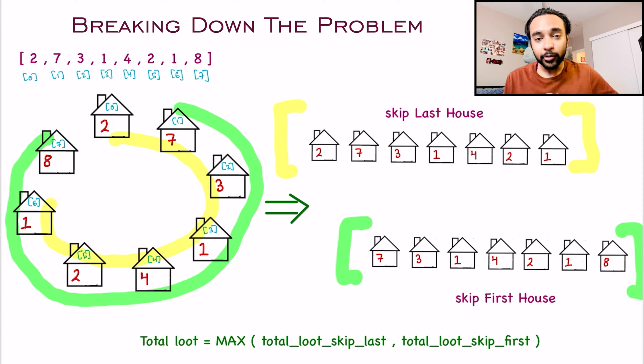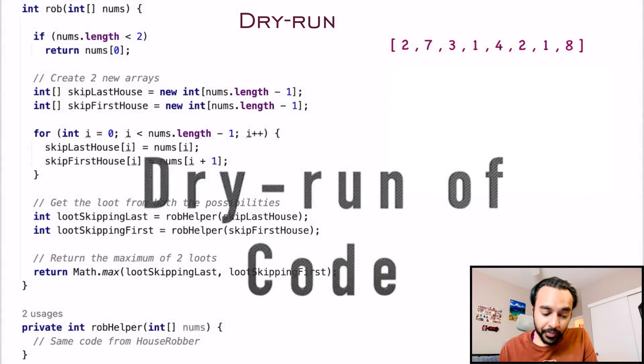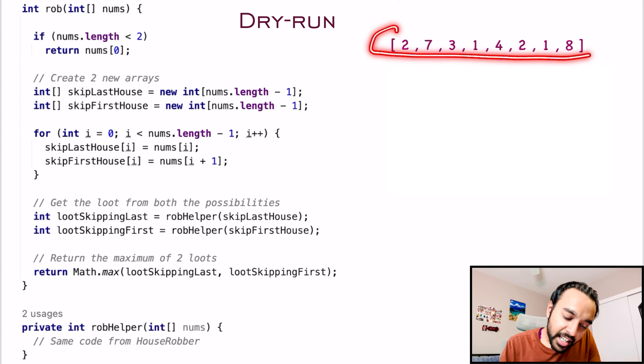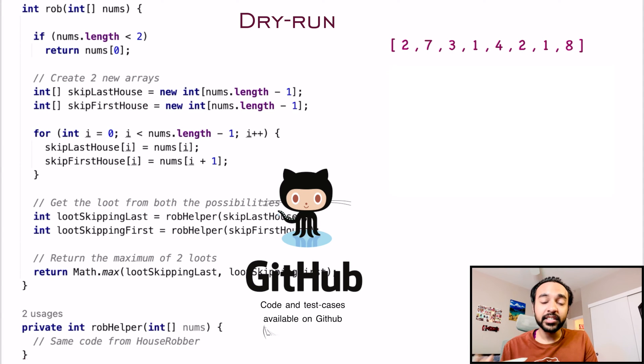Let us quickly do a dry run of the code so that you can understand how this is actually working in action. On the left side of your screen, you have the actual code to implement this solution. And on the right, once again, I have my sample array. And by the way, this complete code and its test cases are also available on my GitHub profile. You can find the link in the description below.